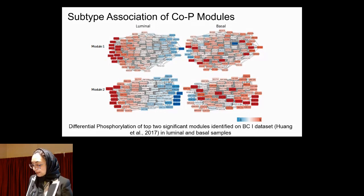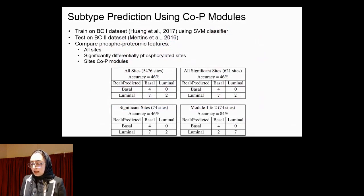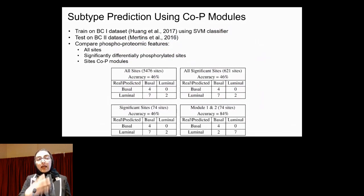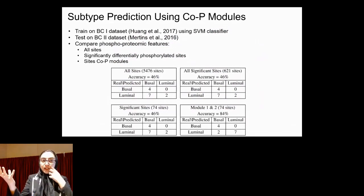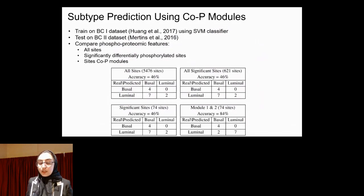We focused on luminal and basal, but we want to generalize this method. To evaluate prediction power, we used an SVM classifier trained on one breast cancer dataset and tested on the second independent breast cancer dataset. Comparing with models using all phosphosites or all significant sites, we show that using the modules actually improves accuracy — providing proof of concept that these modules can be used for subtype prediction.